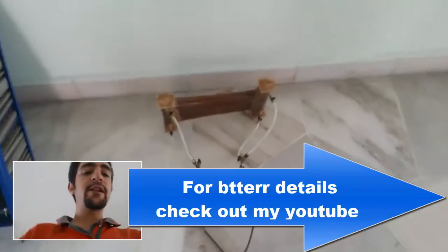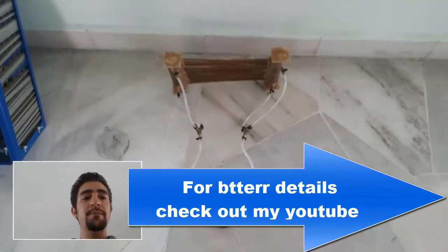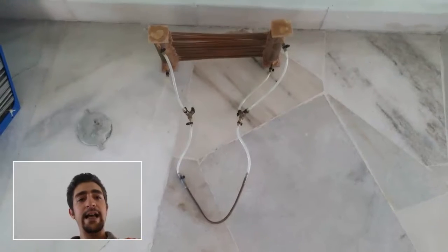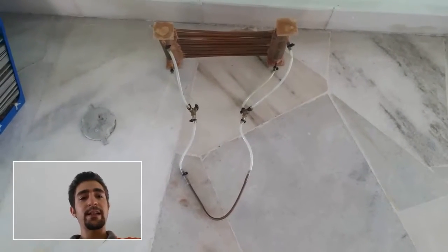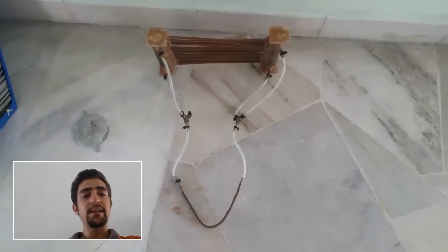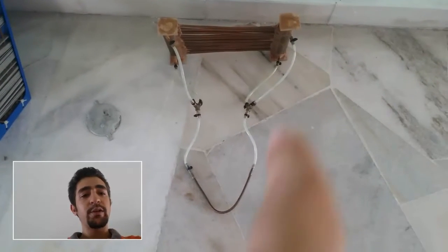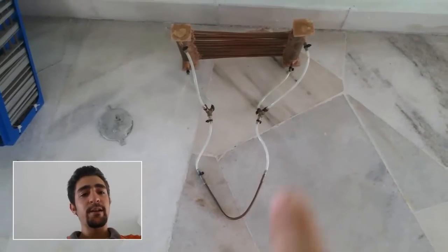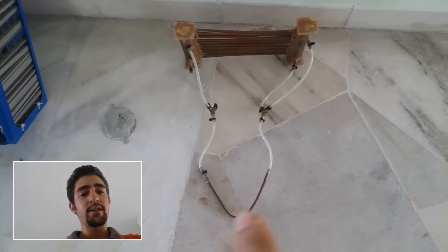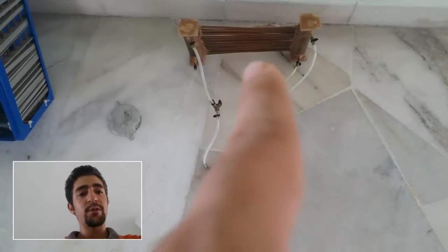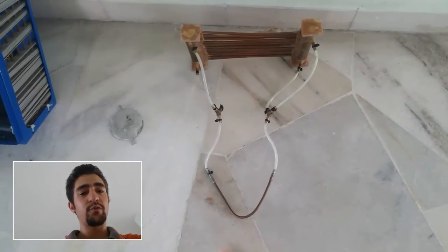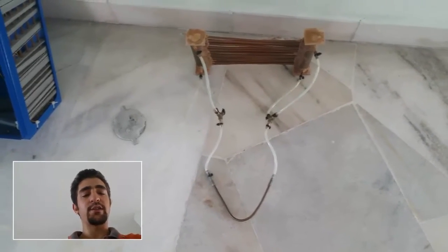So the first prototype that we have made basically stands like this. The liquid in here will boil. This is the heat exchanger part. The liquid would boil and come to the condenser unit and then it would cool down, come back to the heat exchanger.